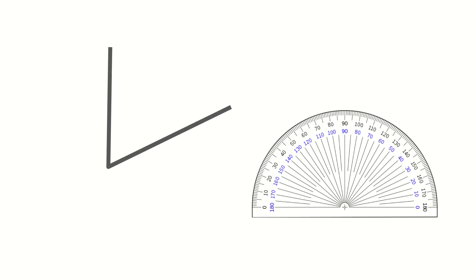We need our protractor itself and we need to have the angle that we're going to measure. First of all, we need to find the center of the protractor. That's the little plus sign in the middle.